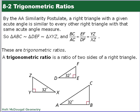Okay, there's a similarity postulate that says a right triangle with a given acute angle is similar to every other right triangle with that same acute angle measure. So the proportions of the sides are going to be maintained. That kind of brings us into trig ratios.